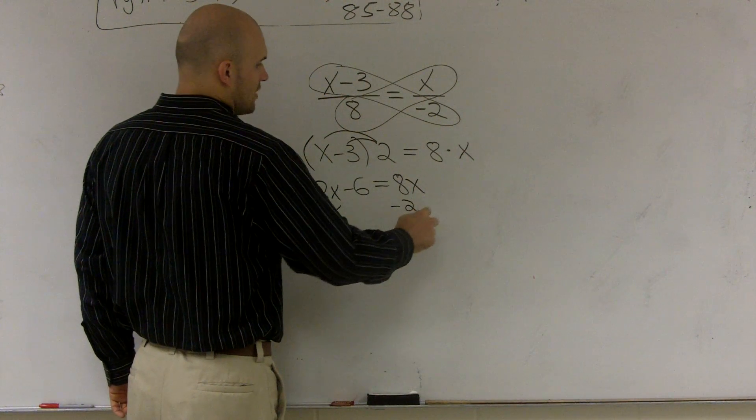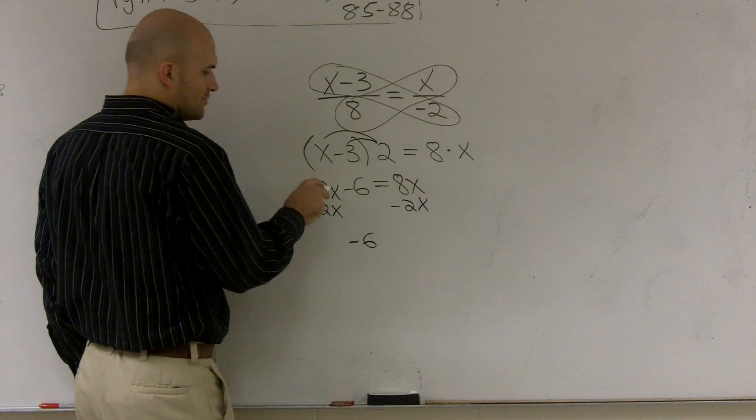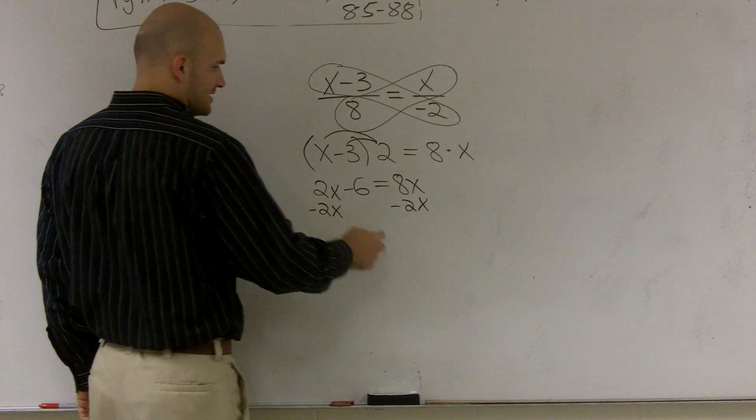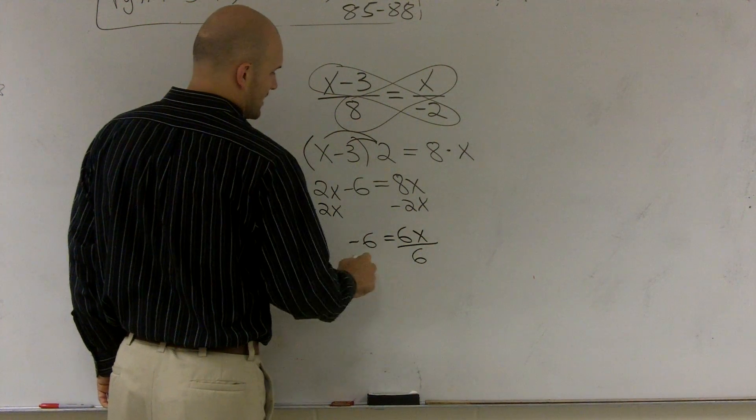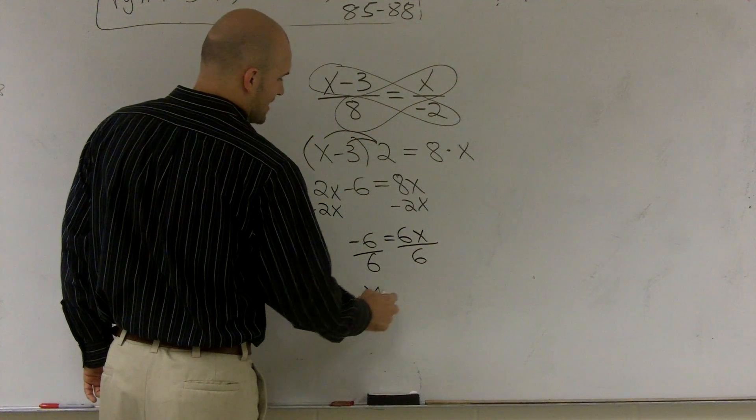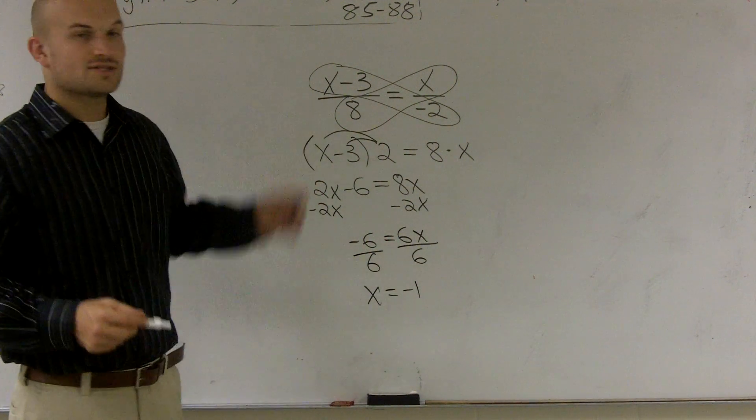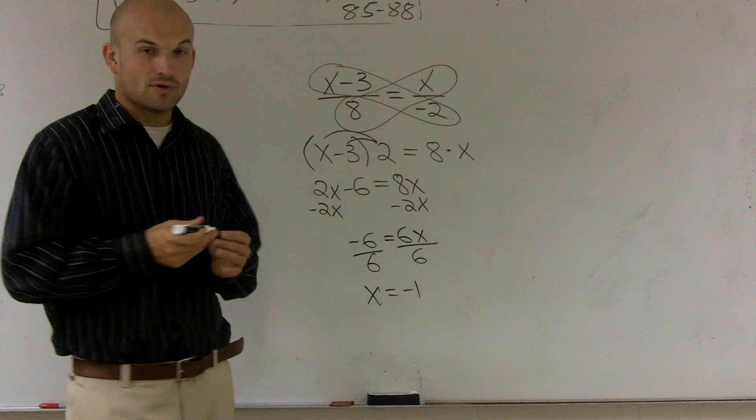Because remember, when you're solving for x, you want to get x by itself. So negative 2x minus negative 2x is 0. So I get negative 6 equals 6x. Now I can divide by 6. x equals negative 1. So that's how you solve a proportion when you have an x on both sides.